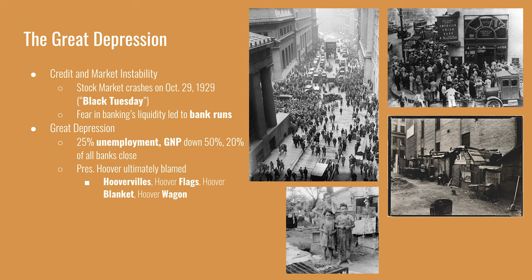People would literally run to the bank, line up outside, and try to withdraw all of their money. If there was no money left when they arrived, all of their savings would be wiped away. The Great Depression was spurred by the stock market crash, which led to a domino effect of other financial institutions crashing. Even though not all banks were investing in the stock market, the perception was that most would fail. Banks that were relatively solvent still experienced bank runs, which caused them to fail — a self-fulfilling prophecy driven by widespread fear.